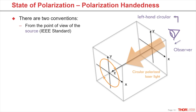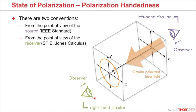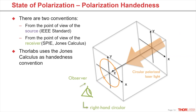To be able to talk about the same left and right, it is important to agree on a common so-called handedness. There are two standards. The first is the IEEE standard that looks from the source point of view — in our example, the orange circle would then be left-hand circular. The second is the Jones calculus that looks from the receiver or detector point of view into the beam, where our example is then seen as right-hand circular. Thorlabs has adopted the Jones calculus point of view in its software documentation and technical resources.